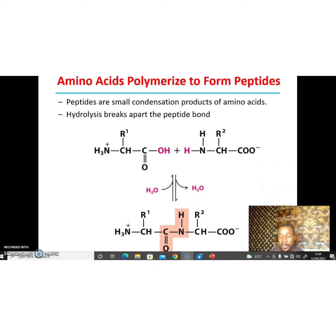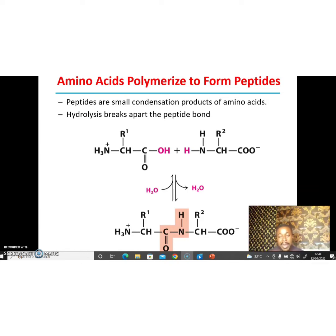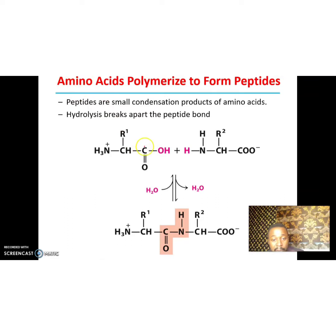Amino acids can polymerize to form proteins or peptides. A peptide is a small condensation product of amino acids. When two or three amino acids join together through peptide bonds, it is the alpha-carboxy group and the alpha-amino group that come into contact to form that bond.